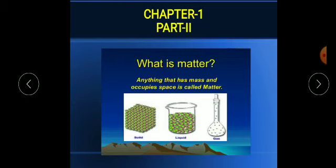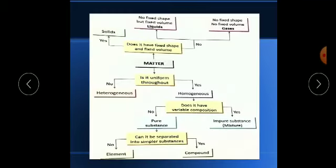Based on composition also it is of two types: pure substances and impure substances. Pure substances have fixed composition whereas impure ones are made up of two or more substances in unfixed ratios — they are mixtures.